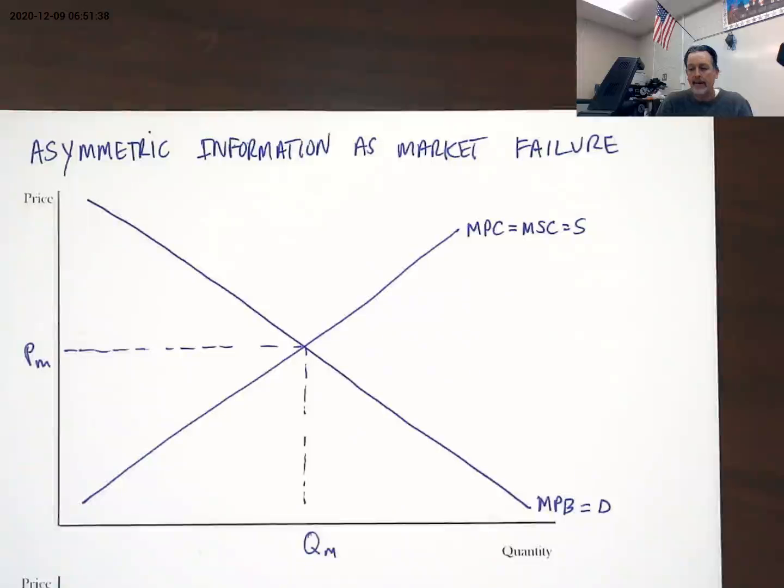Asymmetric information is exactly what it sounds like. It's when two parties to a transaction do not have the same information about the good or service being traded.